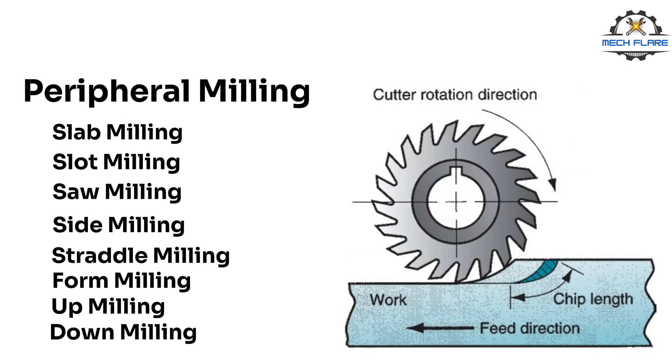In down milling, also called climb milling, the direction of cutter motion is the same as the feed direction when the teeth cut the work. It is milling with the feed.